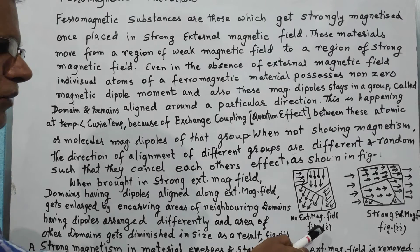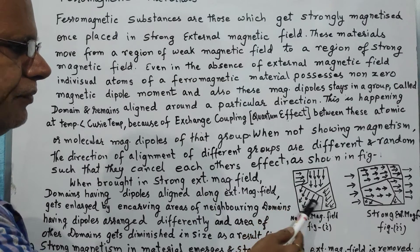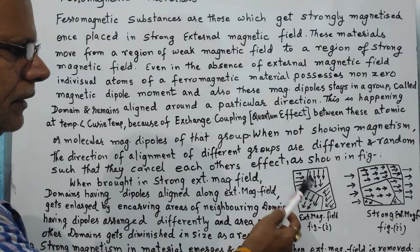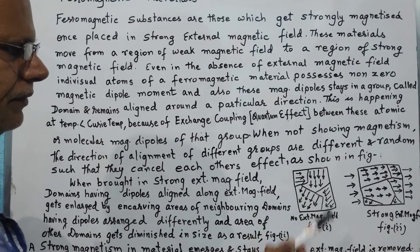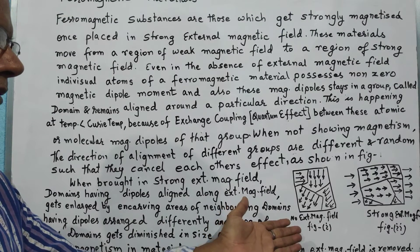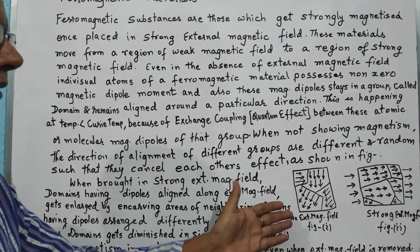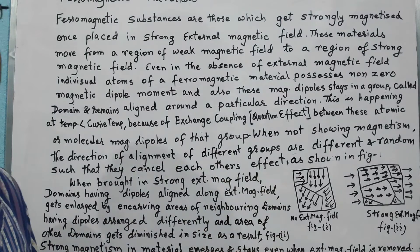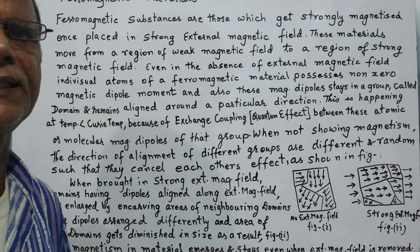As shown in the figure, we have taken four groups — four domains — and the magnetic dipoles are all arranged in different directions randomly, such that the net magnetism is not showing up in the material.